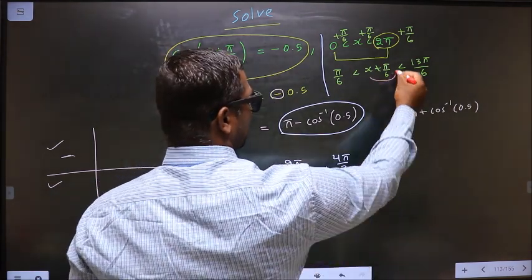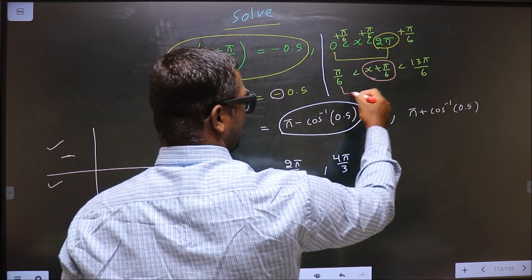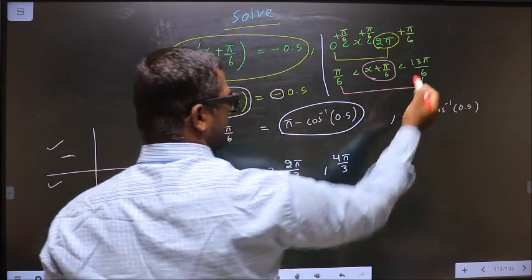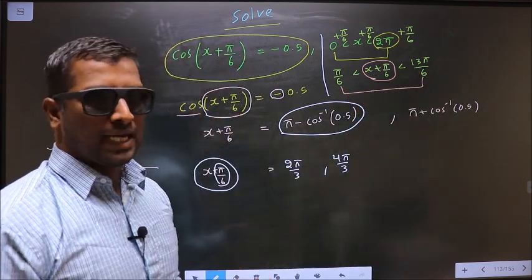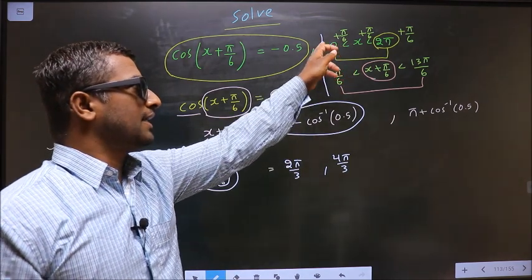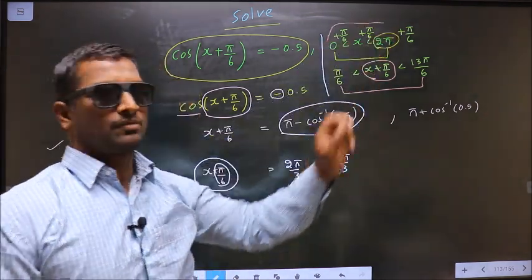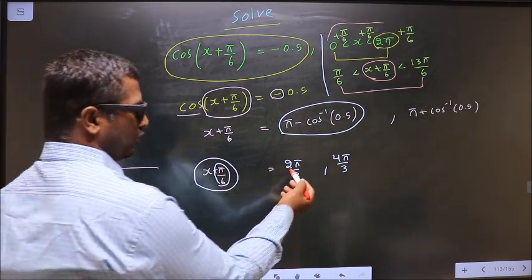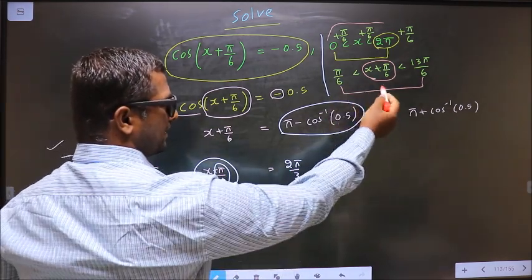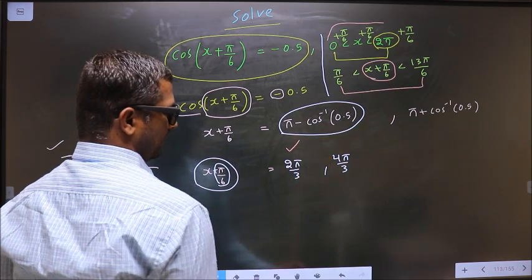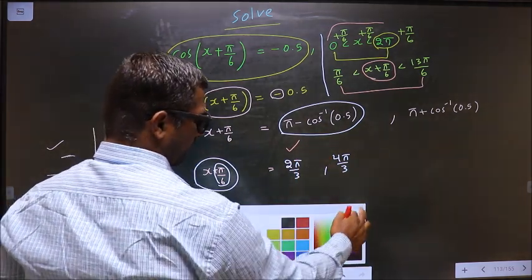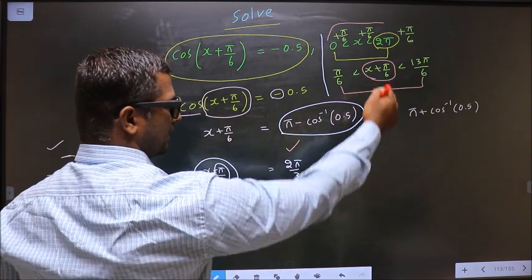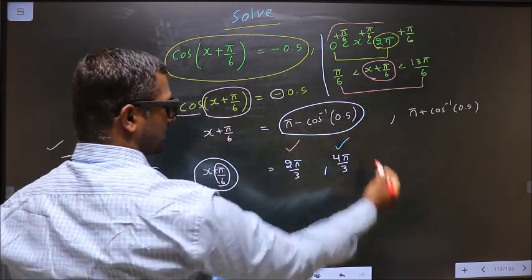So now x + π/6 values should lie in this interval. Then automatically x values will lie in this interval. Clear. Now does 2π/3 lie in this interval? Yes, accepted. Does 4π/3 lie in this interval? Yes, accepted.